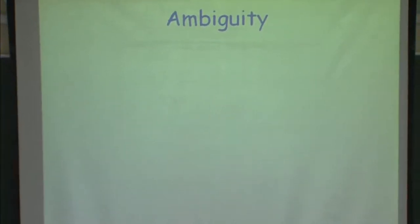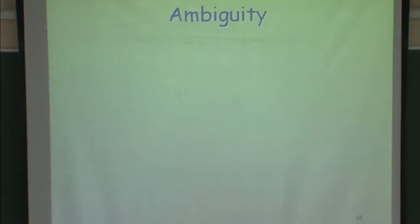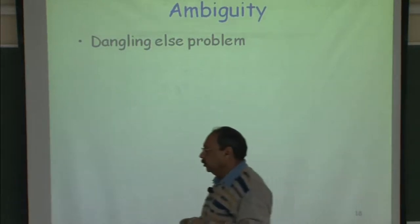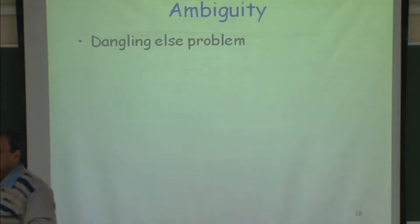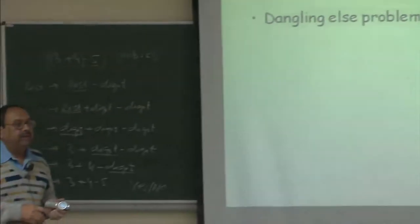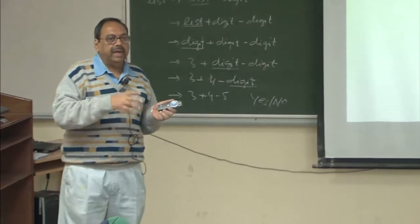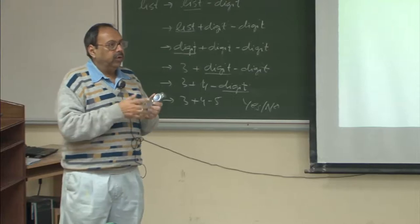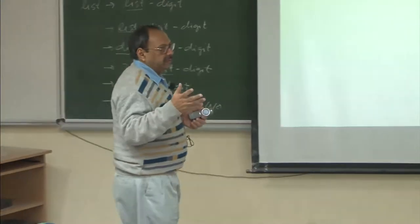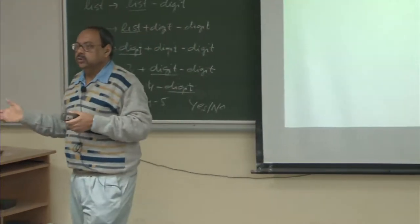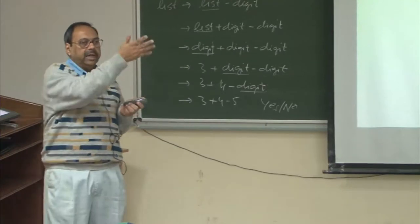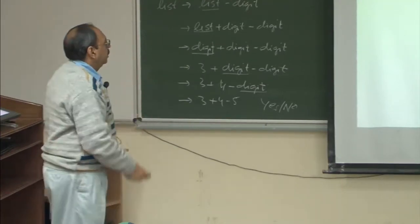Ambiguity does not come only from arithmetic expressions; it can come from other language constructs as well. There is another problem known as the dangling else problem. Most programming languages have a statement which says if-then-else and another which says if-then, and you can have nesting of those. Therefore in a sentence you may not have equal numbers of then's and else's, and the question immediately arises: what is the association between else's and then's?